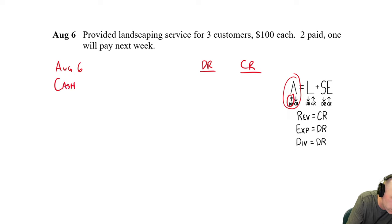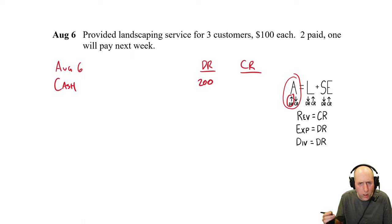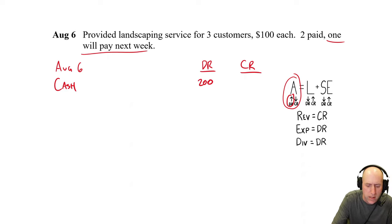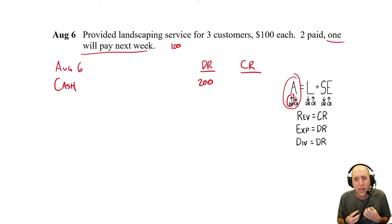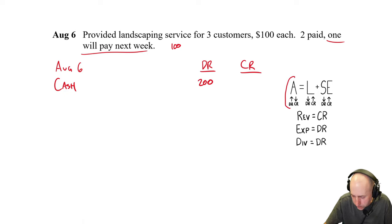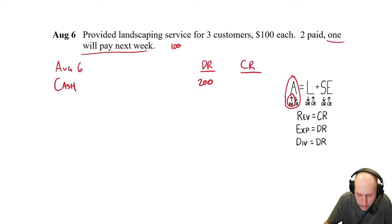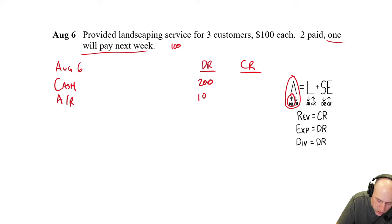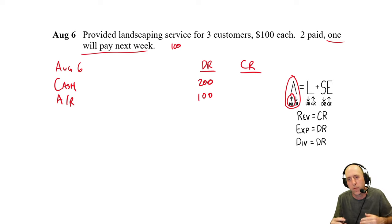A common mistake here: students sometimes credit the revenue account, thinking we're getting paid for landscaping. But remember, we've already recorded the revenue. To record it again would be double counting. August 12th: completed a major landscaping job, billed $4,500, collected half. Cash is going up — debit cash $2,250. The other half is a receivable — debit accounts receivable $2,250. Both assets are increasing. The credit: we did work, we earned revenue — credit landscaping revenue $4,500.